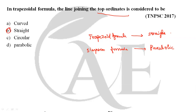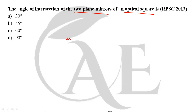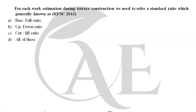Next question: the angle of intersection of the two plane mirrors in an optical square. The two mirrors are placed vertically above the base at 45 degrees to each other, which is required for offsetting at right angles. So the correct answer is 45 degrees, option B.